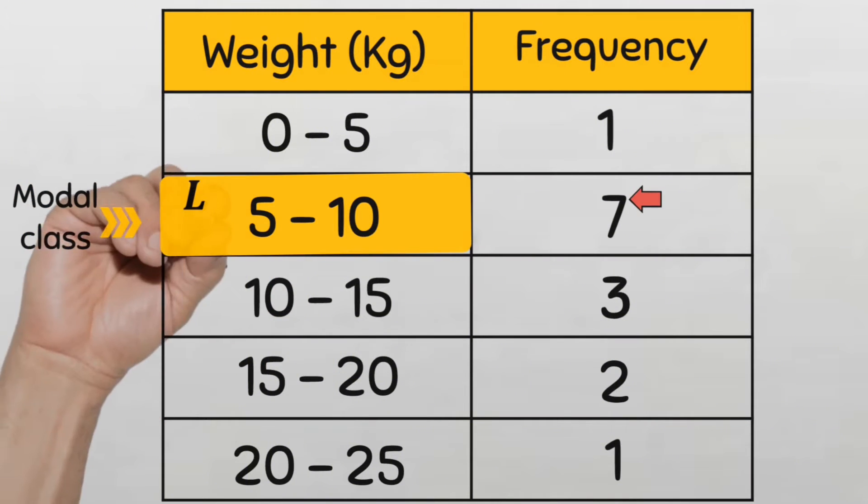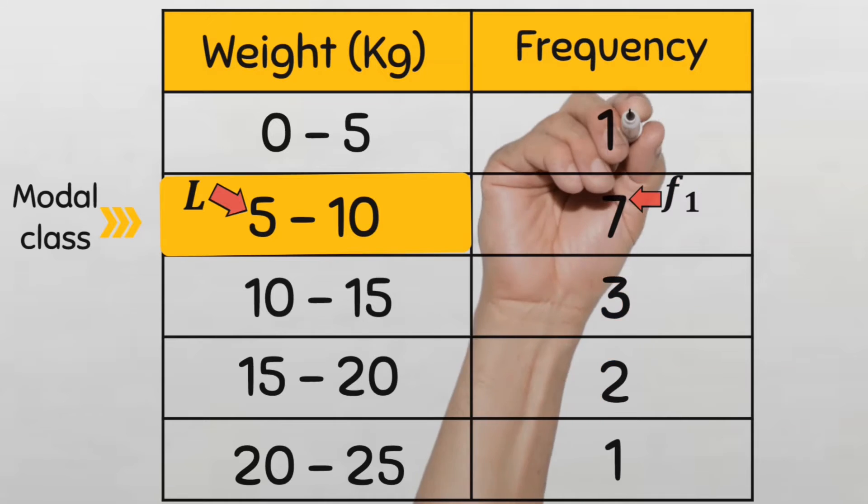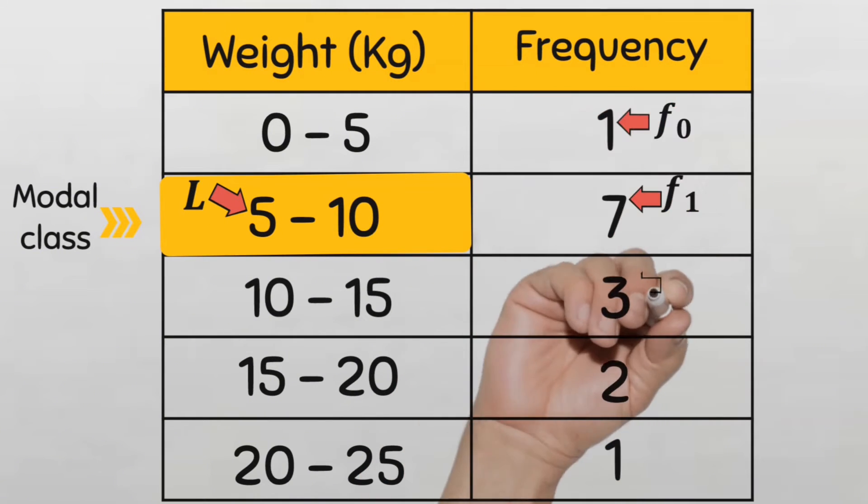And so the lower limit of the modal class L is 5. The frequency of the modal class f sub 1 is the highest frequency and we already know that to be 7. The frequency of the class preceding the modal class f sub 0 is 1, and the frequency of the class succeeding the modal class f sub 2 is 3.